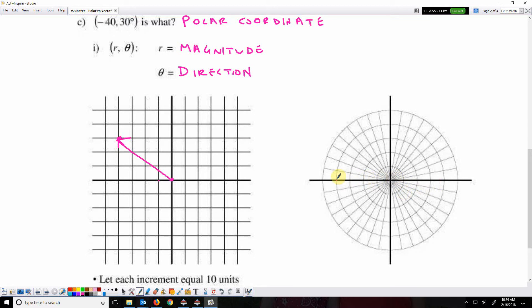And then 30 degrees, and when you have positive degrees, that means you're going counterclockwise. So 10, 20, 30 degrees. There's the vector from polar form.